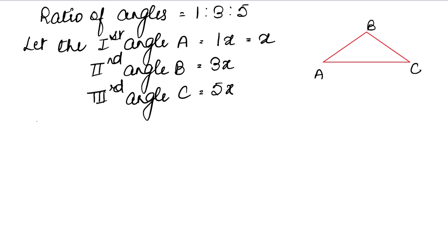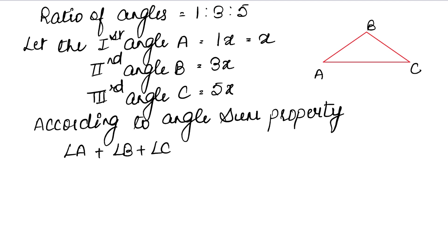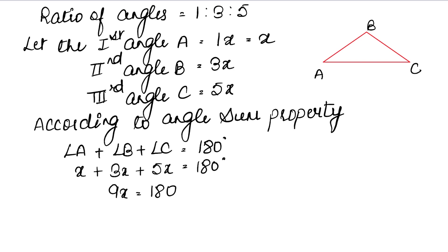According to the angle sum property of a triangle, the sum of all three angles equals 180 degrees. So angle A plus angle B plus angle C equals 180 degrees. That gives us x plus 3x plus 5x equals 180 degrees. These are like terms with x, so 1 plus 3 plus 5 is 9. Therefore 9x equals 180 degrees.